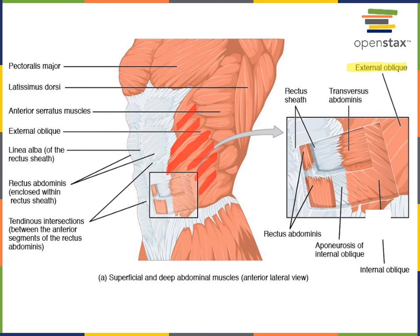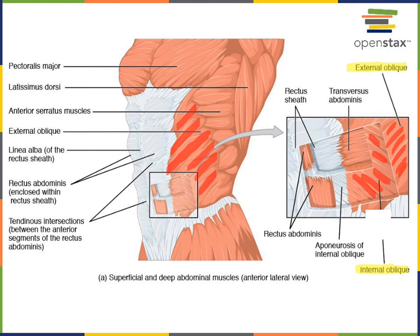These are the external oblique muscles because they are more superficial. There are also deeper oblique muscles known as the internal oblique muscles, which have an oblique orientation running the opposite direction — roughly 90 degrees relative to the external obliques. Even deeper than the internal obliques, the transversus abdominis runs transverse to the long axis of the body, at 90 degrees relative to it.